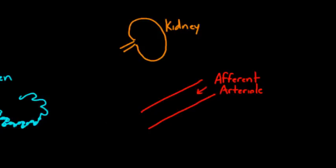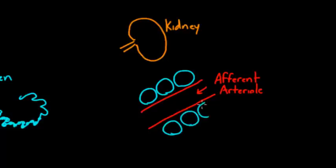And lining this afferent arteriole, you remember there are little cells all the way through like this. And these are called juxtaglomerular cells. And these juxtaglomerular cells have in them little granules. And they're sometimes even called granular cells, you might recall.